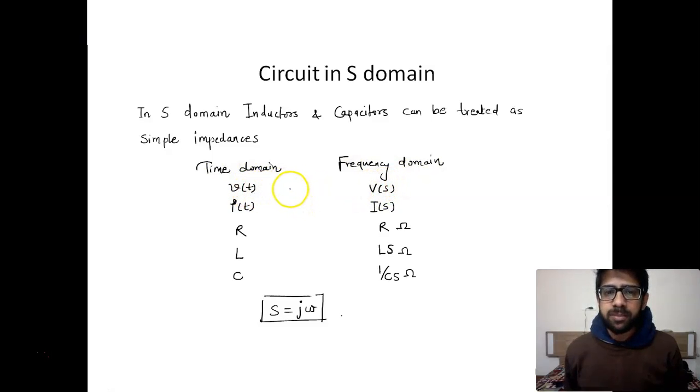If you have V of t, we will just put capital V and say it is V of s. If you have small i of t, that means current going through a mesh or loop, we can call it capital I of s. Resistor value doesn't change in frequency domain and also in time domain, so it remains R.